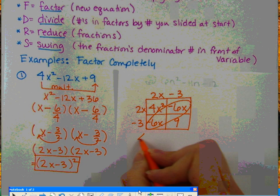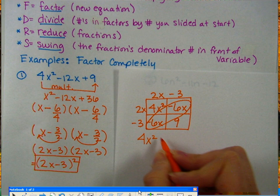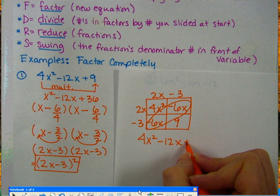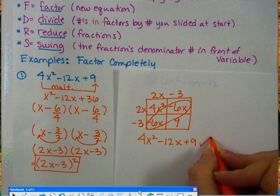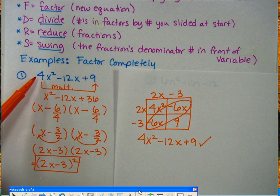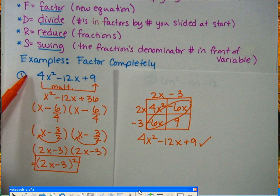So this becomes 4x² - 6x and minus 6x is minus 12x plus 9. And that checks out. So notice that that equals our original problem that we had over here. So that means we factored correctly.